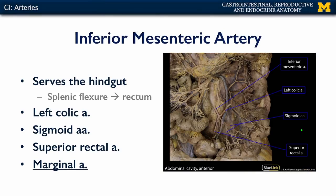Let's take a look at the inferior mesenteric artery. Here it is coming off the abdominal aorta, giving off the left colic artery heading toward the descending colon. It also gives off several sigmoid arteries, and its terminal branch is the superior rectal artery. The sigmoid arteries and left colic artery feed into the marginal artery, which is contiguous about the large intestine, completing those anastomoses. The superior rectal artery heads down to supply the rectum and anal canal.